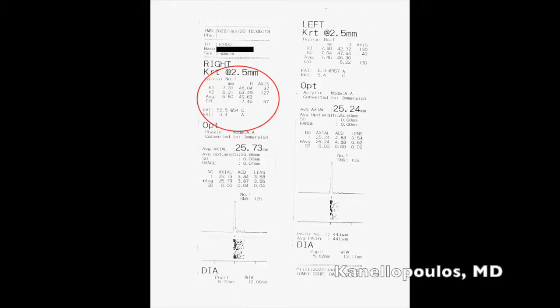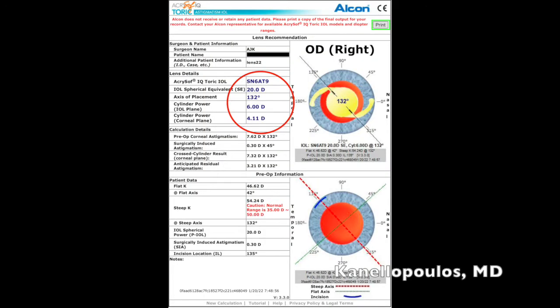This is the keratometry calculation from the Tomei that we talked about. We're basing our IOL calculation on the Acrysof Toric — it's a T9, not available in the US — and it's a 6-diopter lens at 132 degrees. So here's our surgical plan: T9 at 132 degrees on the drape at the time of surgery.